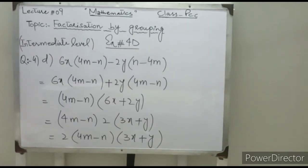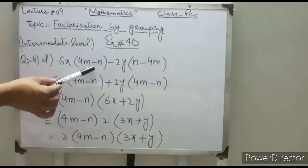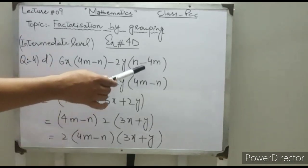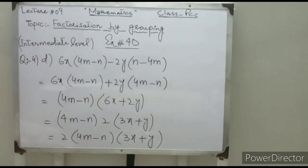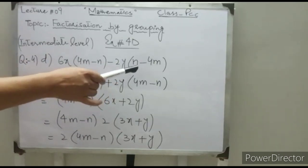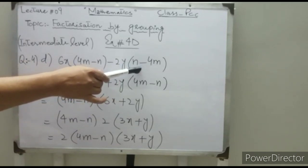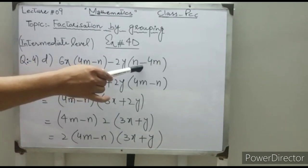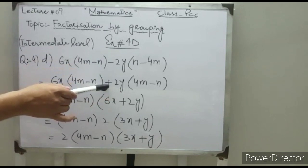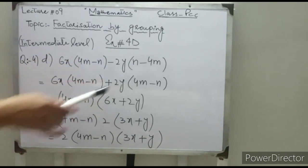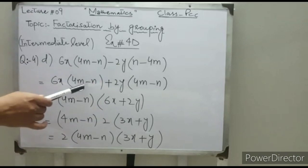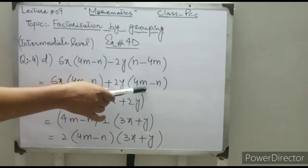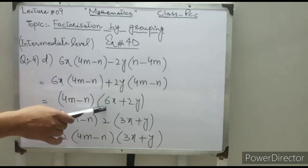In question 4 part D, one factor is (4m minus n) but the other factor is (n minus 4m). We take minus common from the second factor so it becomes the same as (4m minus n), with a positive sign remaining. Now both factors are (4m minus n), so take (4m minus n) common — the remaining is 6x plus 2y.